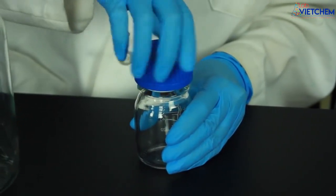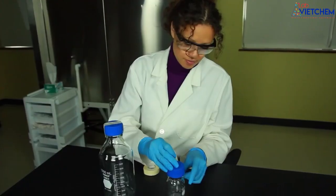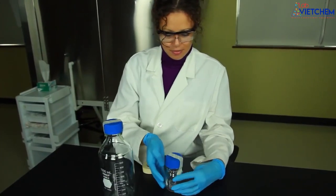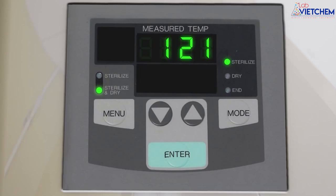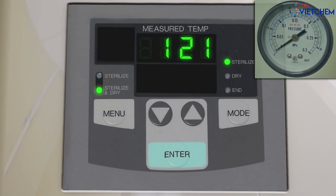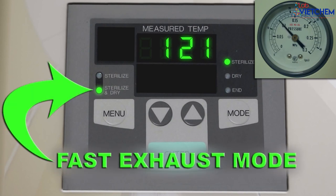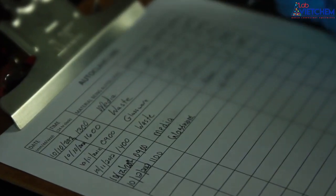Tighten the cap, but then loosen it about halfway. Place the autoclave tape over the lid and put the bottles into the basket. Set the autoclave to 121 degrees celsius, 15 psi, and a 20 minute run time. Select the fast exhaust mode. Complete and initial the log.